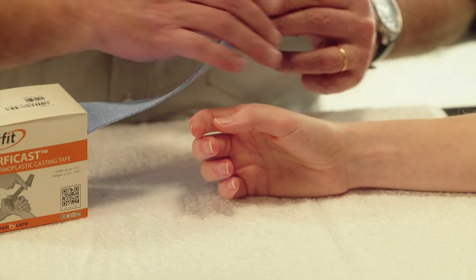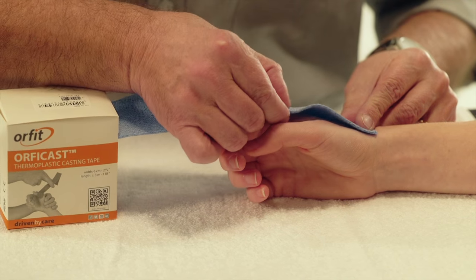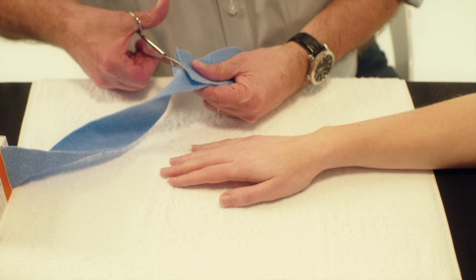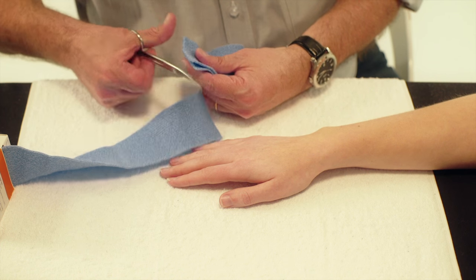Take a piece of Orphicast of 6 cm wide. Measure 2 times the distance between the first web space and the base of the thumb and cut the Orphicast accordingly.